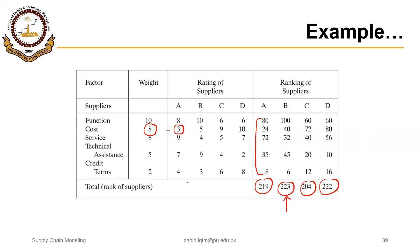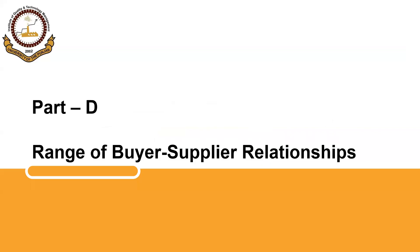You could decide a certain range. For example, if you convert the score out of 100, suppliers scoring 90 to 100 might be classified as category A, 80 to 90 as category B, and 70 to 80 as category C — or as platinum, gold, silver, or some other classification. In the next segment, we will discuss the range of buyer-supplier relationships. Thank you very much.